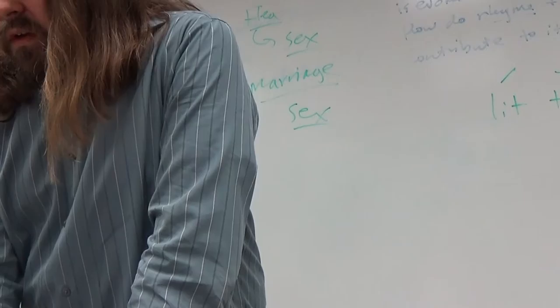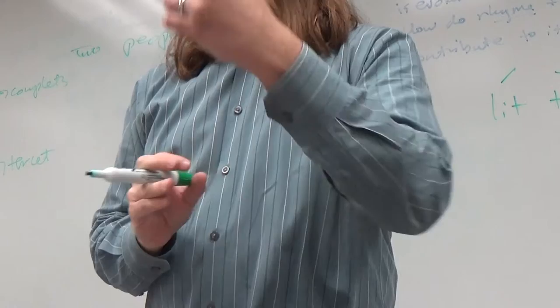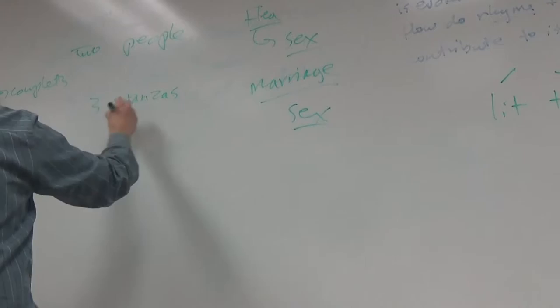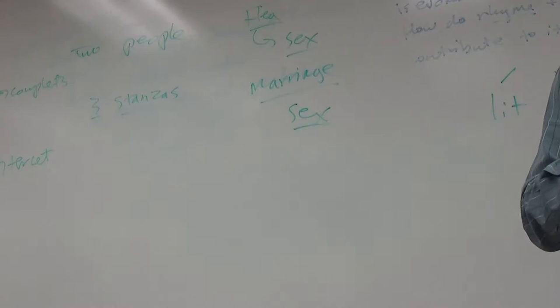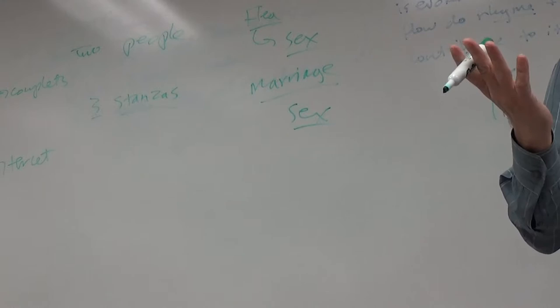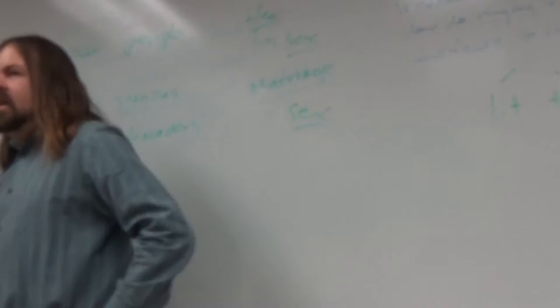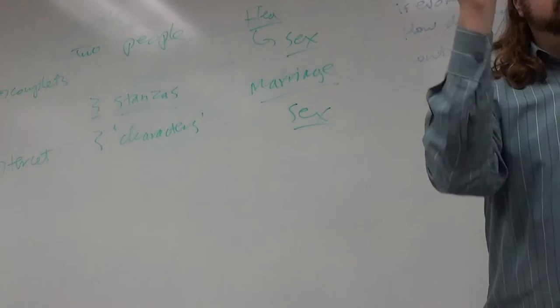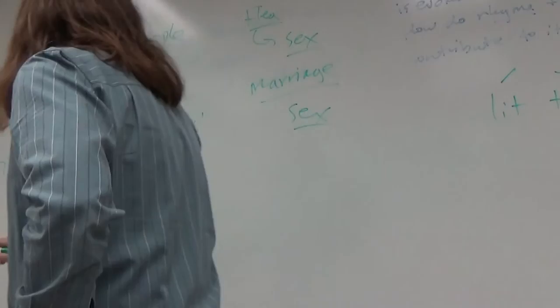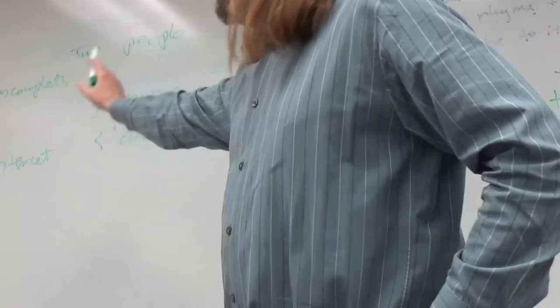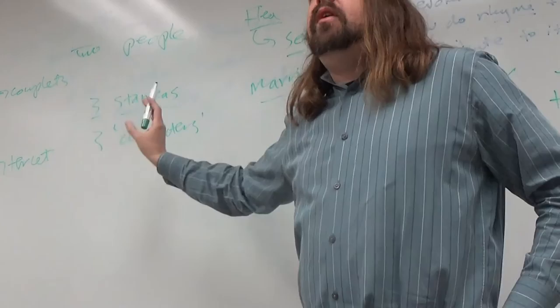Now how many stanzas do we have in the poem? Three. And how many figures, characters, do we have in the poem? Include the flea? Three. So one thing that we note from observing the rhyme scheme and the stanza pattern is that just about everything in the poem works in threes. Three couplets and a tercet in each stanza, three stanzas, three characters, three separate arguments from the speaker to his mistress.